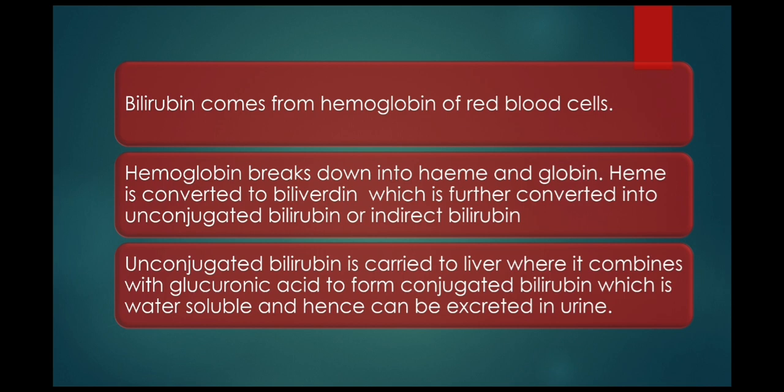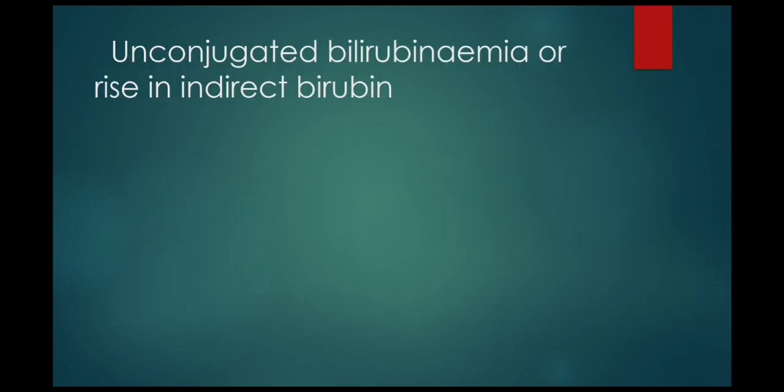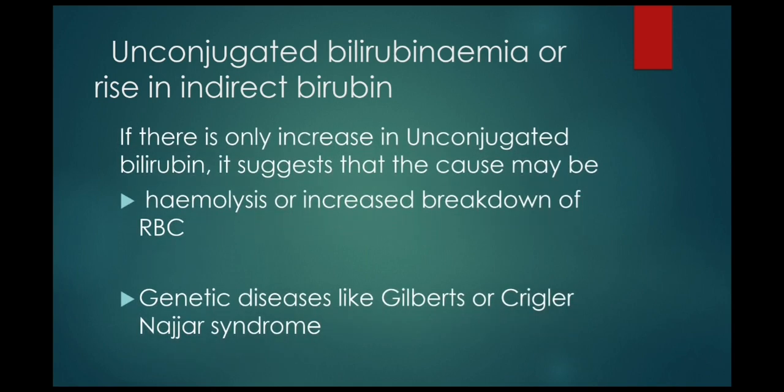Conjugated bilirubin is water soluble and hence excreted in urine. What are the causes of unconjugated bilirubinemia or rise in indirect bilirubin? If there is an increase in unconjugated bilirubin, it suggests that the cause may be hemolysis or increased breakdown of red blood cells.